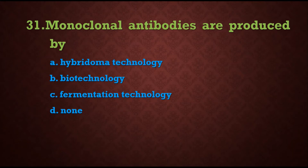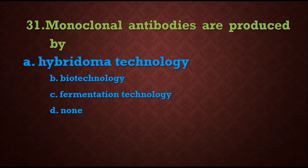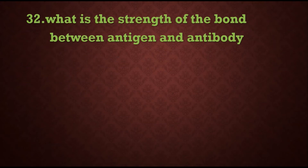Question 31: Monoclonal antibodies are produced by — options are: A) hybridoma technology, B) biotechnology, C) fermentation technology, D) none of the above. The answer is A) hybridoma technology, where two kinds of cells — B cells and myeloma cells — are fused together. The resulting hybridoma cell produces monoclonal antibodies.